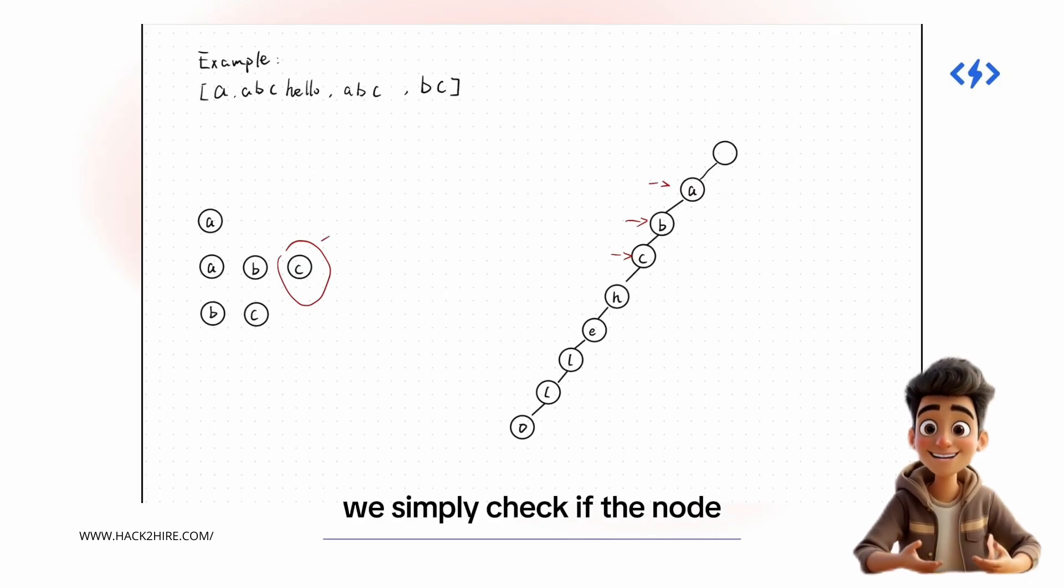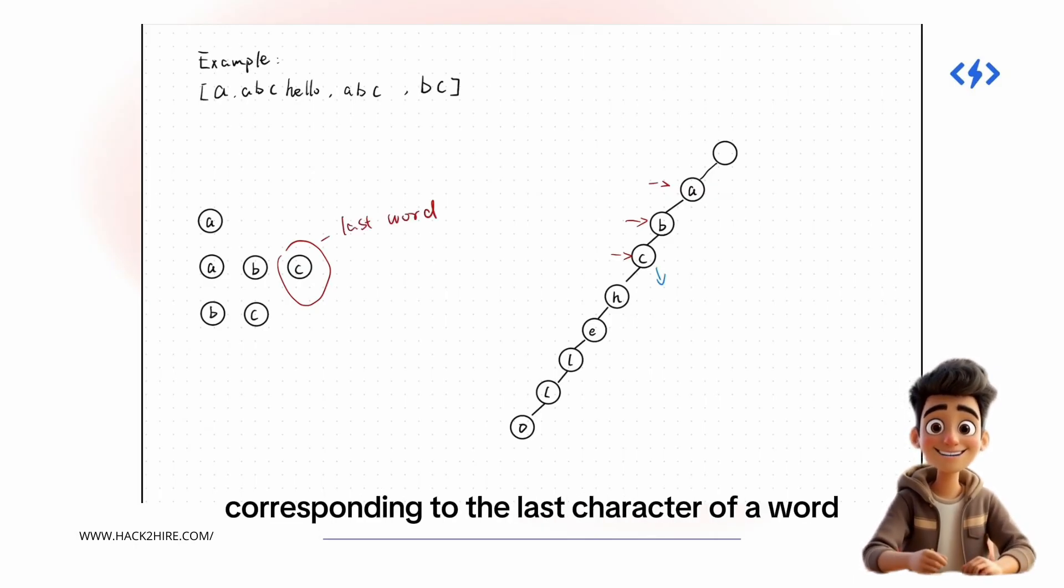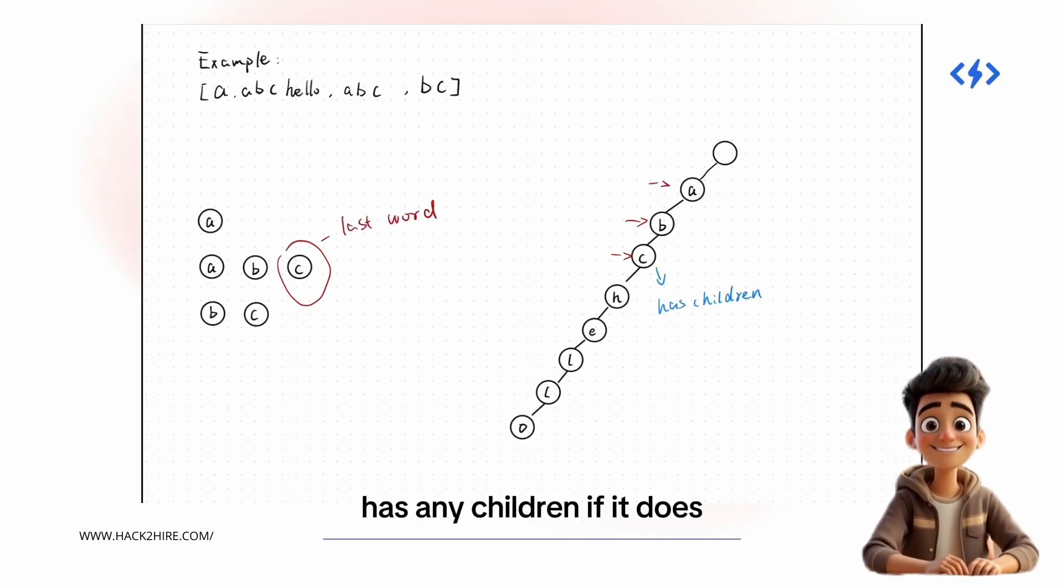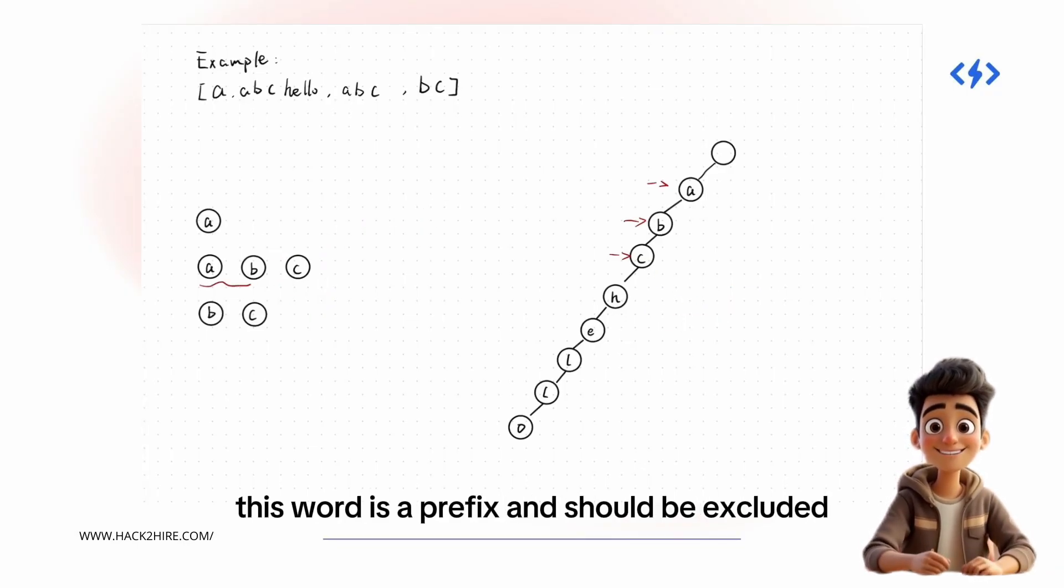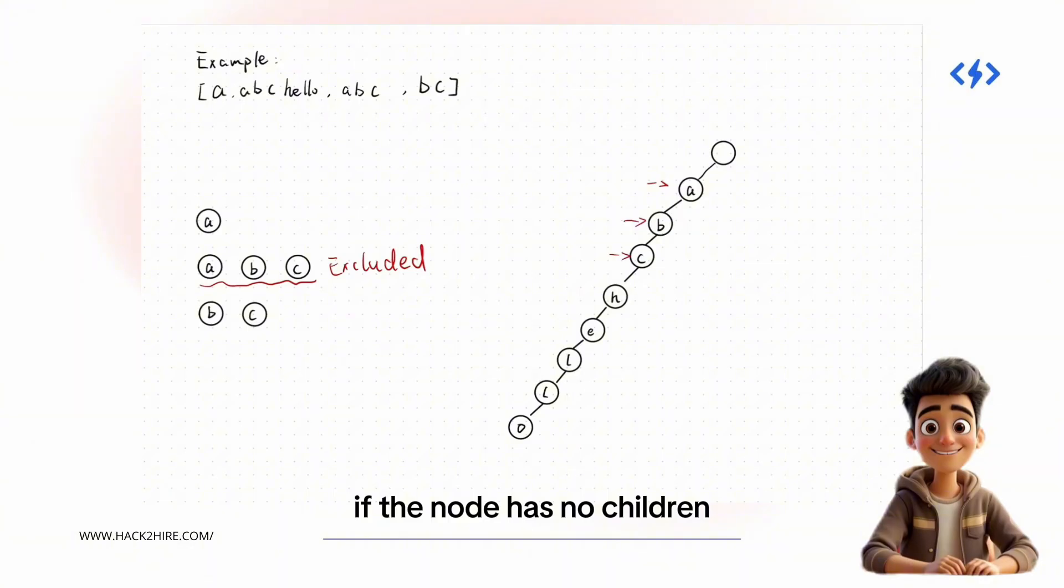To detect prefixes, we simply check if the node corresponding to the last character of a word has any children. If it does, this word is a prefix and should be excluded. If the node has no children, it's not a prefix, we keep it.